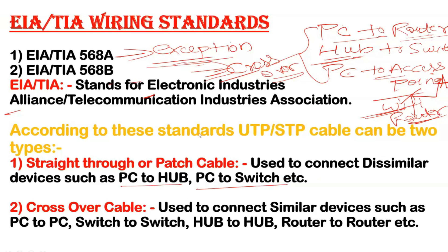A student asks for clarification: regardless of what we call the device, the exception depends on the internal mechanism or configuration of the device. The instructor confirms: yes, it's the internal functionality that determines which cable type to use. PC and router appear different but their internal mechanisms are similar, so a crossover cable is used.